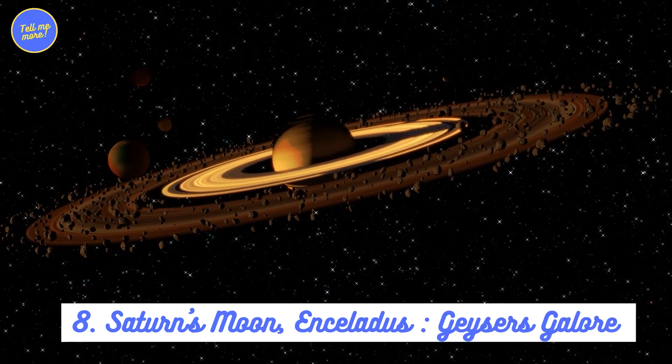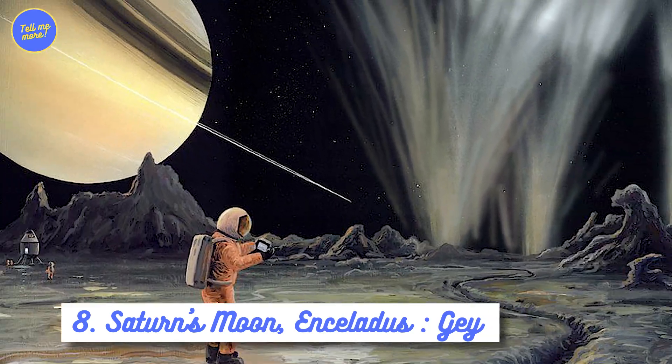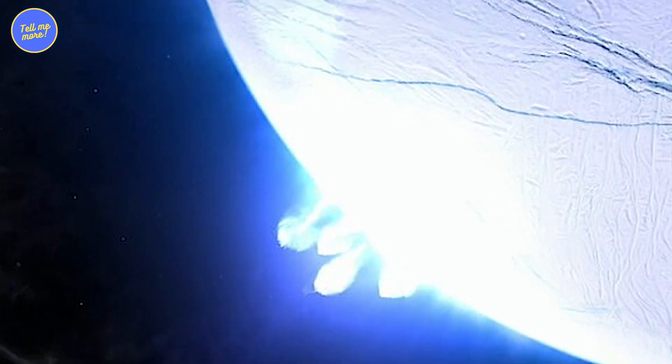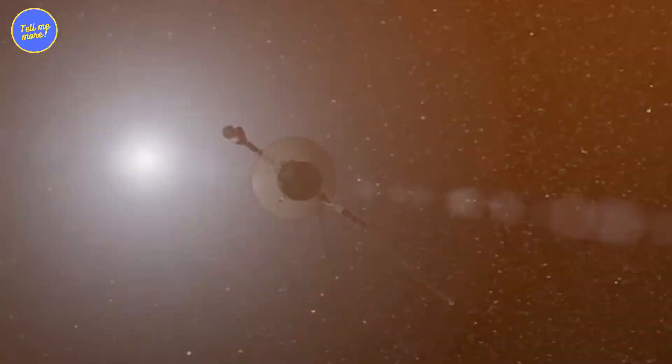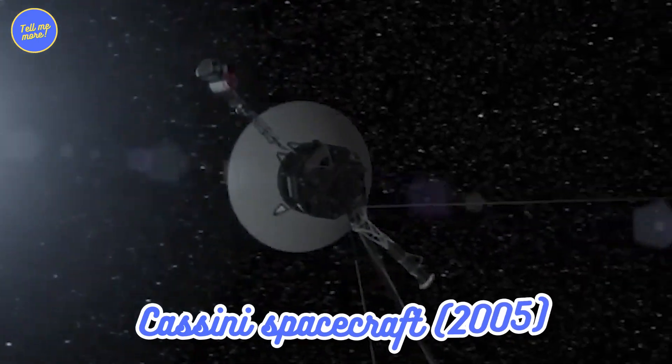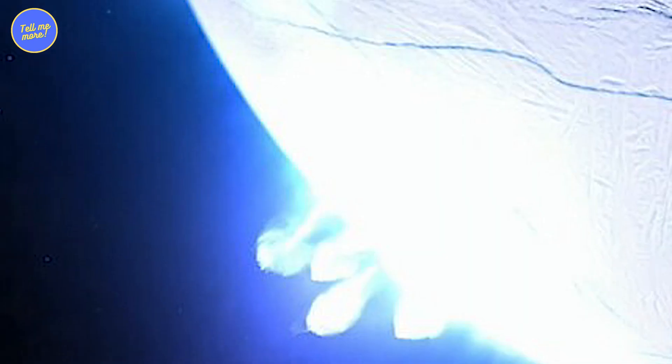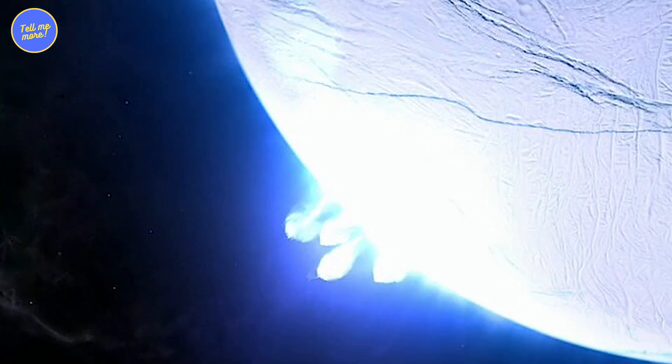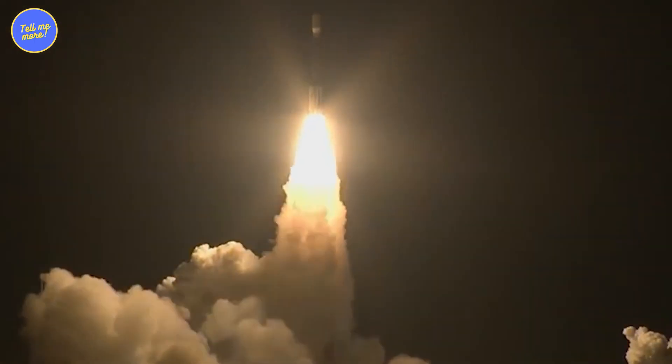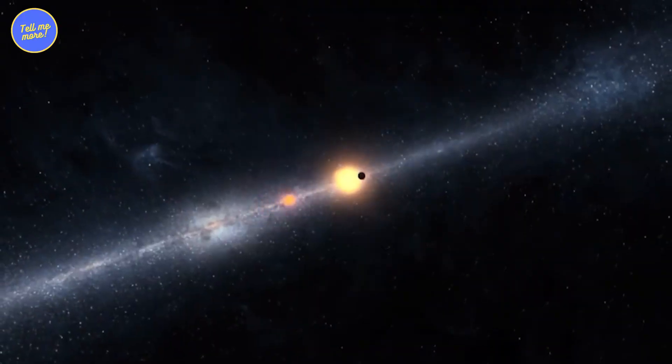8. Saturn's Moon, Enceladus Geysers Galore. Who knew Saturn had a moon with a secret geyser obsession? Cassini spacecraft sure found out in 2005. It did a flyby of Enceladus and whoa, there were these towering plumes of water erupting from its south pole. Imagine the surprise on the scientists' faces. Talk about a cosmic shower party.